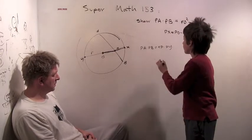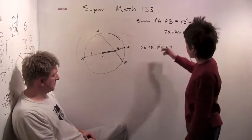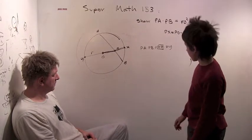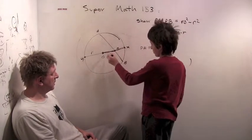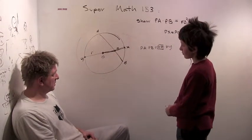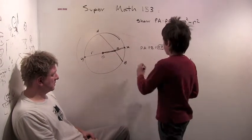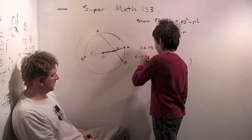Well, we have a PX here, but in this case it's not PO minus R. I guess PO is less than R. Yeah, so what is PX in this case? PX is R minus PO.